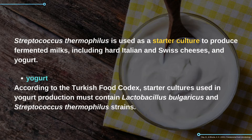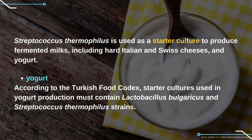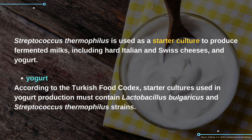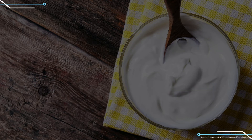Streptococcus thermophilus is used as a starter culture to produce fermented products including hard Italian and Swiss cheeses and yogurt. According to the Turkish Food Codex, starter cultures used in yogurt production must contain Lactobacillus bulgaricus and Streptococcus thermophilus strains.